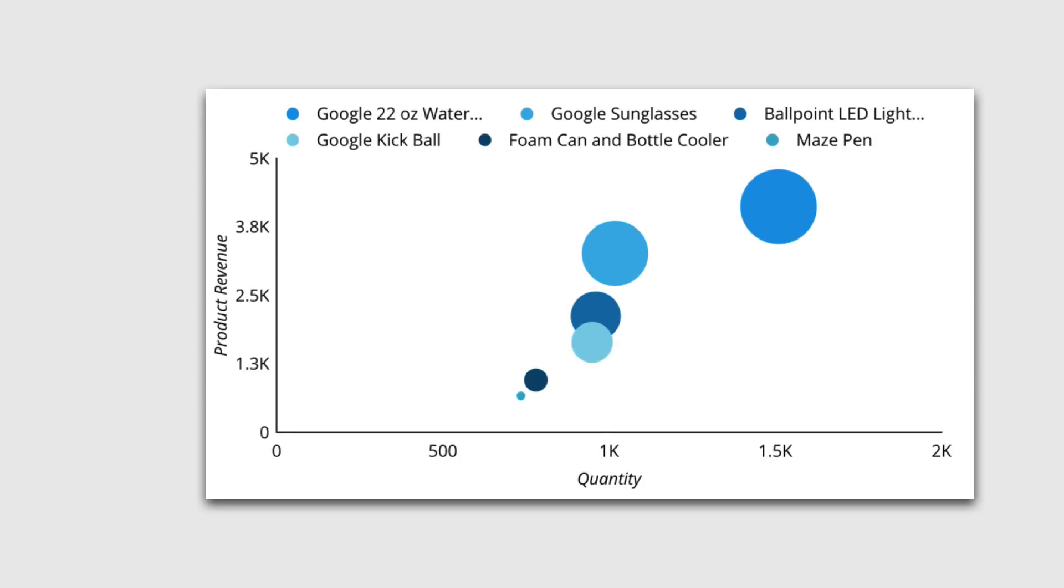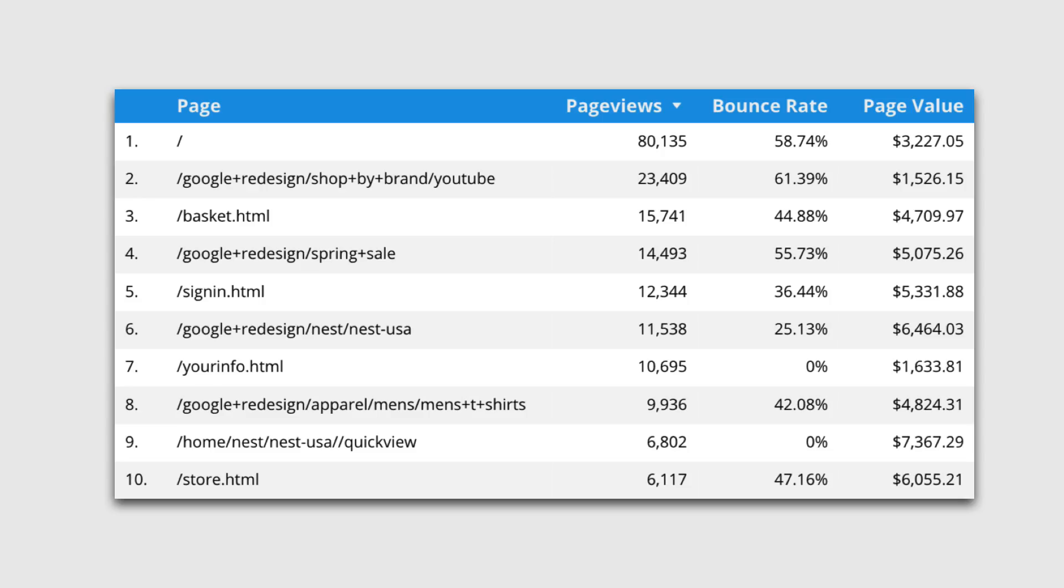Bubble charts can be used to show relationships, like showing the traffic to product pages along with their total product revenue. Tables are great for presenting detail. Sometimes you need more than a simple visualization, and this is where a table can work better than using multiple graphs, like when you want to show multiple metrics for a dimension.